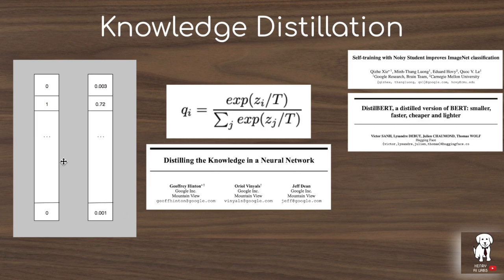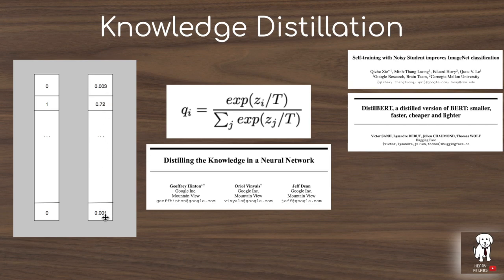Datasets typically have one-hot encoded class label vectors. In CIFAR-10 or ImageNet, the class label Y has zeros everywhere and then a one in the place of the class label — so for a ship image, it'd be zero for cat, zero for dog, and one for ship. The idea is to train a teacher network on this one-hot encoded distribution, and then once trained, it will produce soft predictions assigning very low probabilities to certain classes. The idea is to use this distribution of labels to train the student network, optionally with a temperature parameter to smoothen out the teacher's predictions.